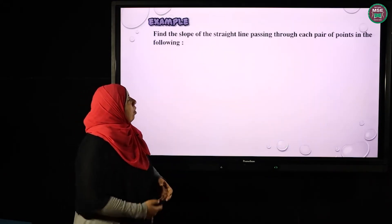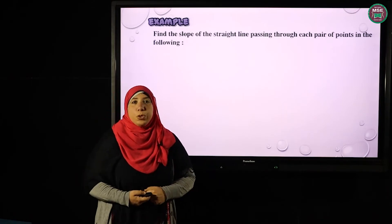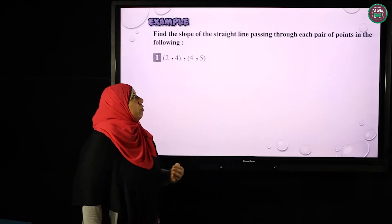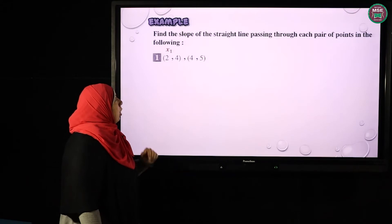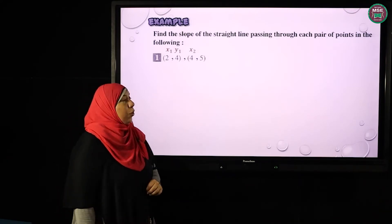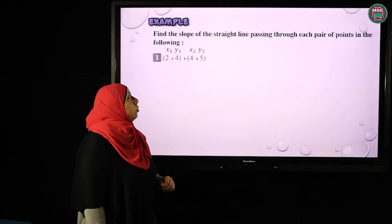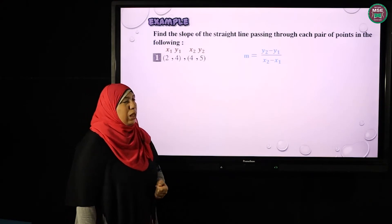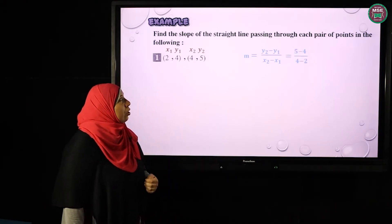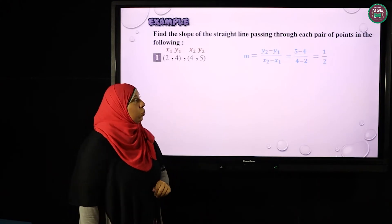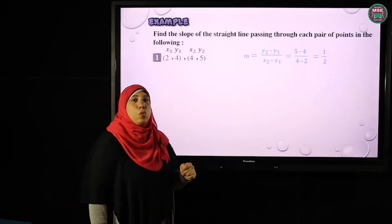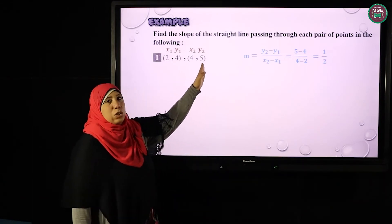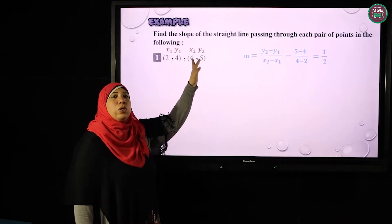For example, find the slope of a straight line passing through each pair of points. Number one: I have two points (2, 4) and (4, 5), and I want to calculate the slope. If I say this is (x1, y1) and the other point is (x2, y2), to calculate the slope m, I make (y2 − y1) / (x2 − x1) = (5 − 4) / (4 − 2) = 1/2. We have to start with Y and with the same point in numerator and denominator.